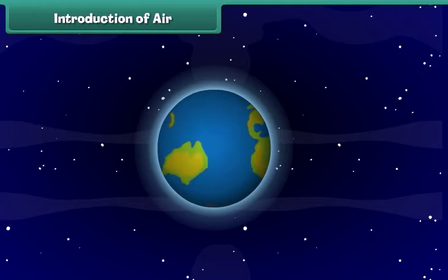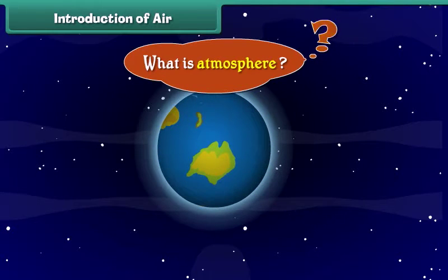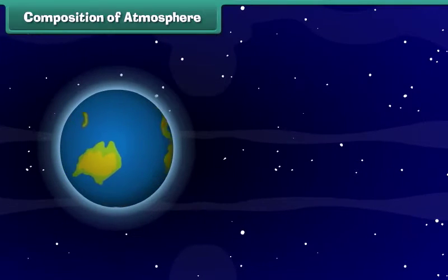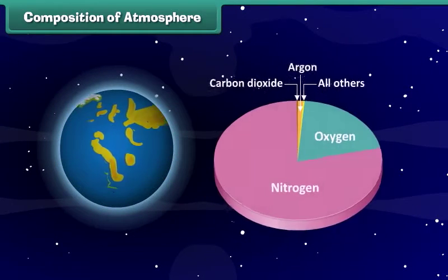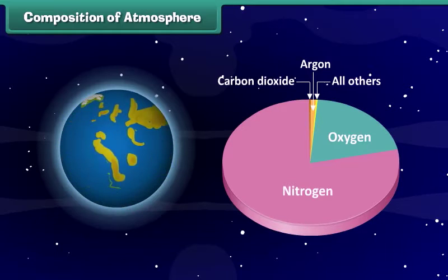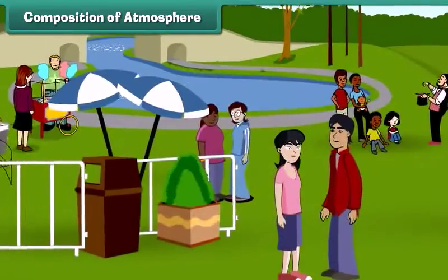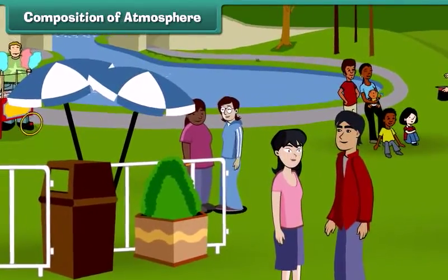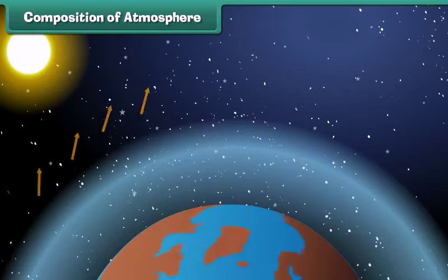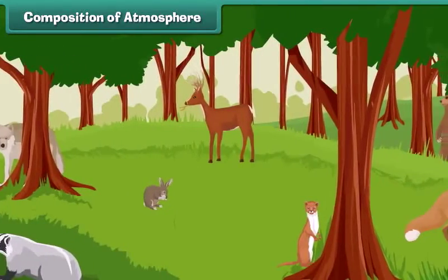Do you know the atmosphere surrounding earth is full of air? But what is this atmosphere? The atmosphere is made up of a mixture of gases, primarily nitrogen and oxygen, that wrap around the earth like a blanket. Without the atmosphere we would not be able to live here. It protects us from the dangerous rays coming from the sun and makes earth a perfect habitat for plants and animals.